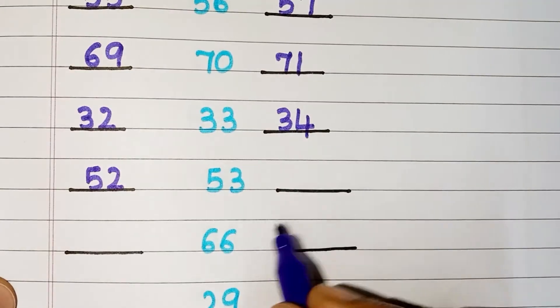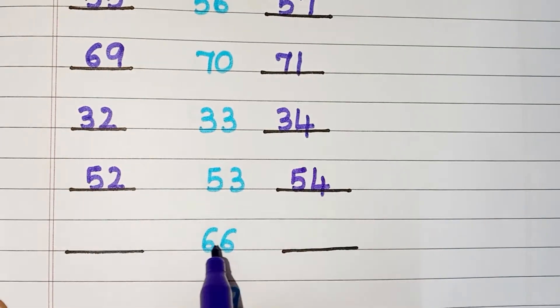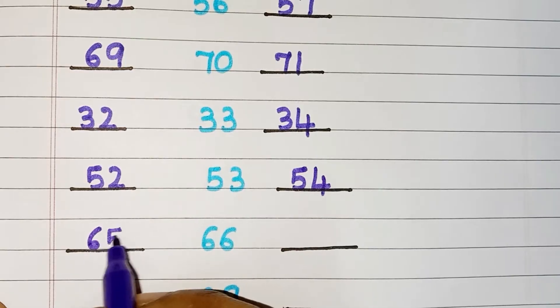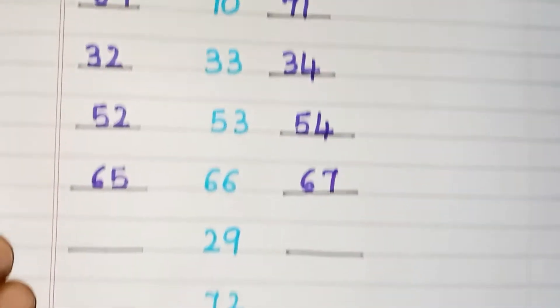Number which comes before 53 is 52. After 53, 54. Number which comes before 66 is 65. After 66, 67.